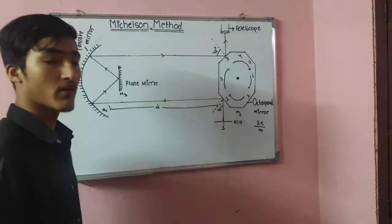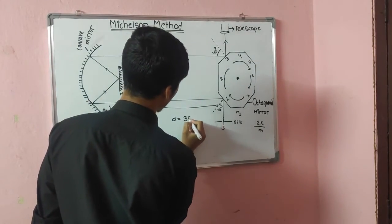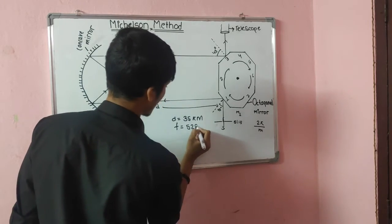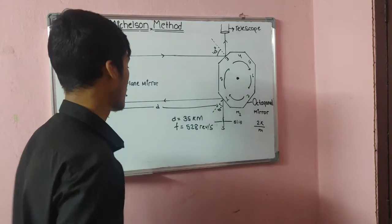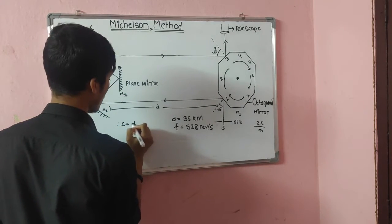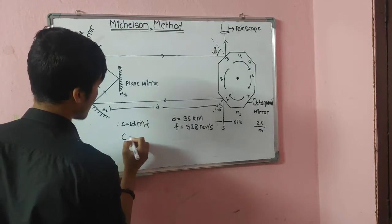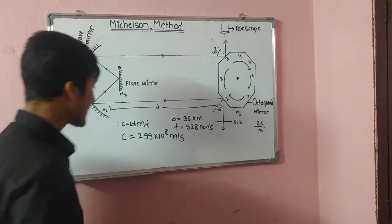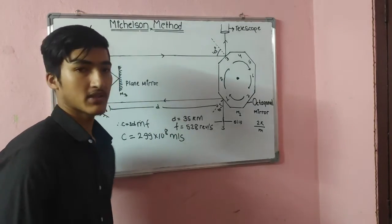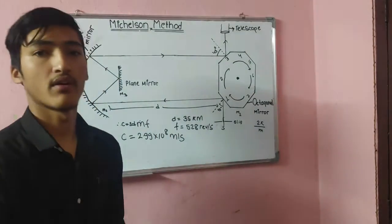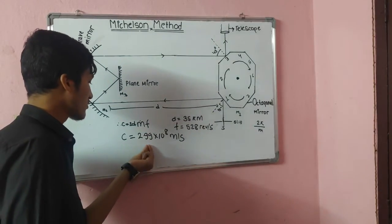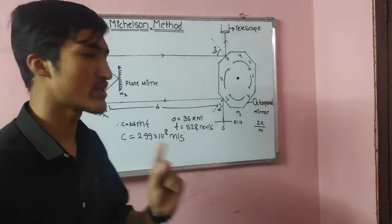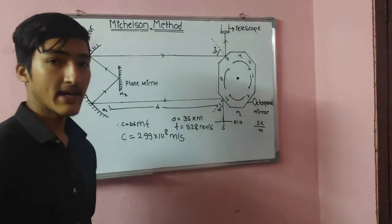In his original experiment between two mountains, Michelson used D = 35 km and a motor frequency of approximately 528 rotations per second. Substituting into C = 2DMf, he obtained C ≈ 2.99 × 10⁸ m/s, which is nearly equal to the accepted value of 3 × 10⁸ m/s. This is why the Michelson method is considered the most precise experimental method for determining the speed of light.